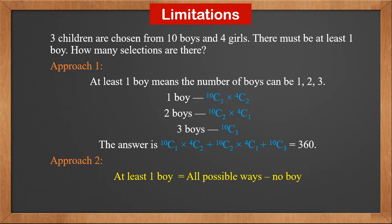Approach 2 is an easier one. We know at least 1 is all minus none. Therefore, at least 1 boy equals all possible ways minus no boys. All possible ways is 14C3. No boys means selecting all 3 from girls only — this is 4C3. So the answer is 14C3 minus 4C3, which is also 360.